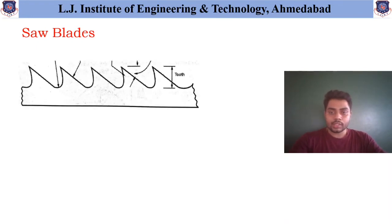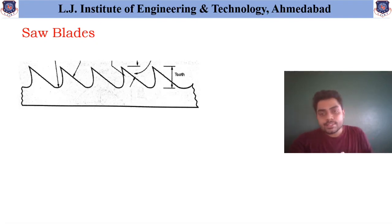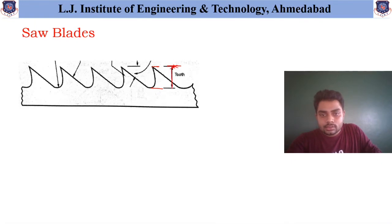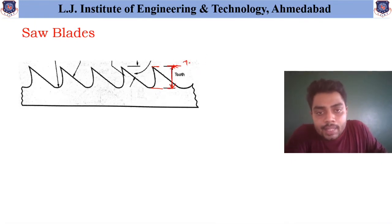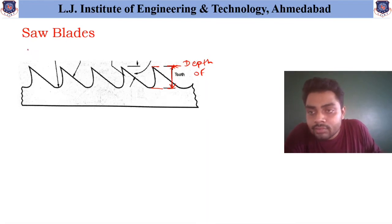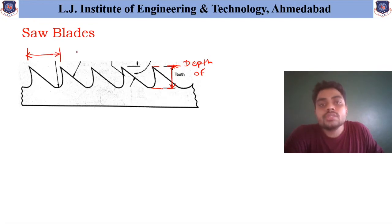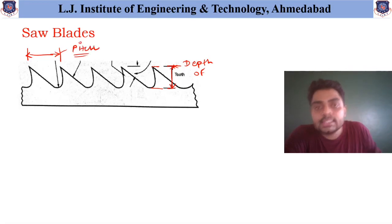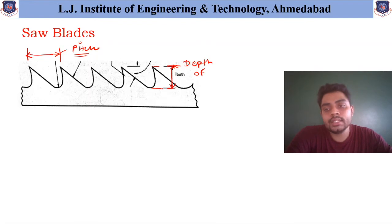First, let us have a look at this simple zoomed view of this blade. As you can see, this is the depth of the tooth — this distance is called as the depth of the tooth. The second parameter is the distance between two similar teeth — this distance is called as the pitch, and this is nothing but the distance between two consecutive teeth available.